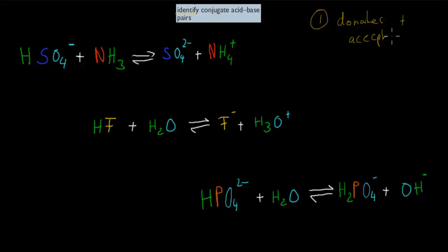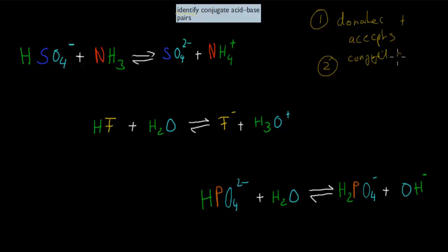Remember, that's how we can figure out if something is an acid or a base. The second part is: whatever donates a hydrogen, its opposite will be the one that accepts the hydrogen. So the donation opposite will be the conjugate acceptor. And the opposite of the acceptor — so the opposite of the actual base — will be its conjugate donator, so the conjugate acid. This might sound a bit confusing, but it will be very obvious when we go over the example.